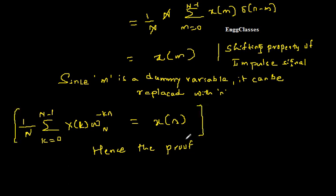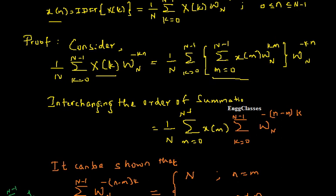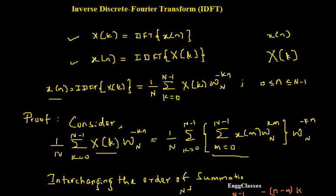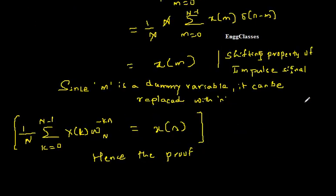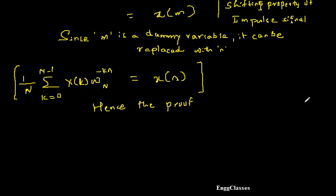So x of n is equal to this derivation, and one must be aware of it to solve any numericals on IDFT. This is the derivation for inverse DFT: x of n equals 1 over N, summation k equal to 0 to N minus 1, X of k, W_N to the power minus k n, where n varies from 0 to N minus 1. If there are any doubts please let me know in the comment section. Subscribe to our channel NG Classes for more videos on digital signal processing. Thank you everyone for watching.